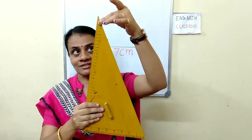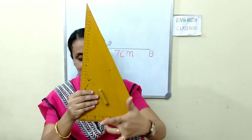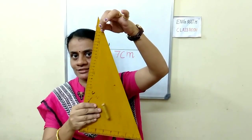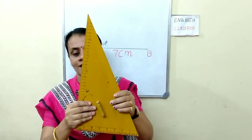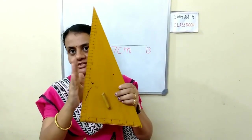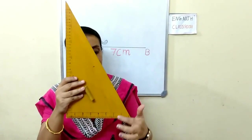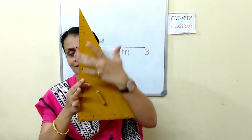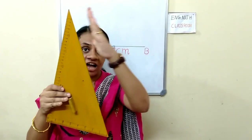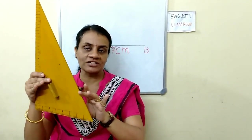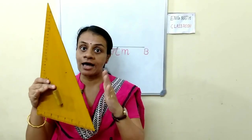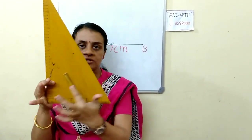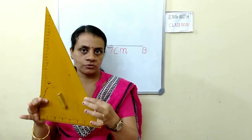Now look at the second set square. The smallest angle is opposite the smallest side, so that angle is 30 degrees. The larger side has 60 degrees opposite to it. The largest side is the hypotenuse and 90 degrees is opposite to the hypotenuse. So this set square has angles 30, 60, and 90 degrees.